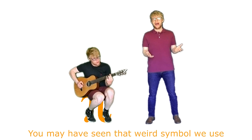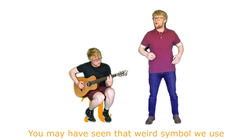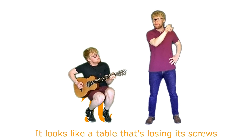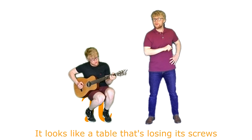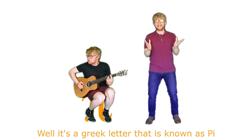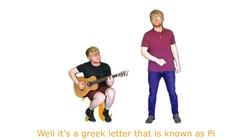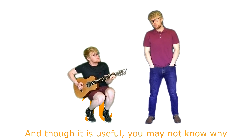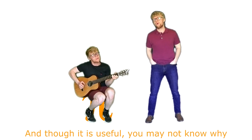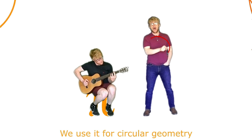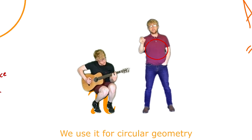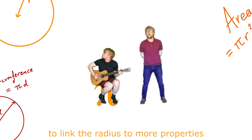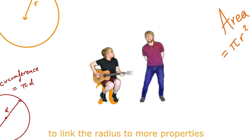You may have seen that weird symbol we use. It looks like a table that's losing its screws. Well, it's a Greek letter that is known as pi. And though it is useful, you may not know why. We use it for circular geometry, to link the radius to more properties.